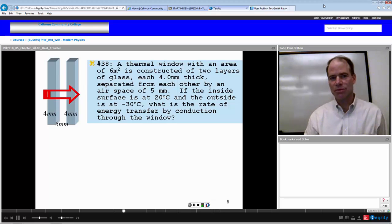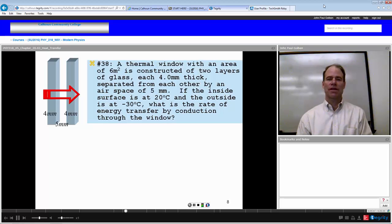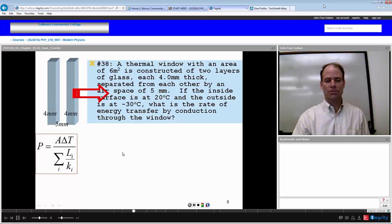So let's try a compound slab of materials. In this case, we have a thermal window. A thermal window with an area of 6 square meters is constructed of two layers of glass, each 4 millimeters thick, separated from each other by an air space of 5 millimeters. If the inside surface is at 20 degrees Celsius and the outside is at minus 30 degrees Celsius, so we have a temperature change of 50, what is the rate of energy transfer by conduction through the window? Again, we're looking for rate of energy. We're looking for power. So we have three substances: glass, air, and glass.